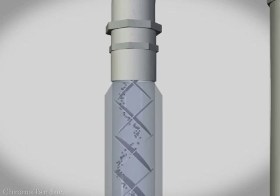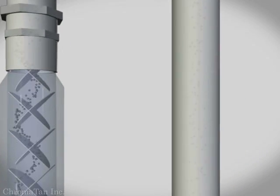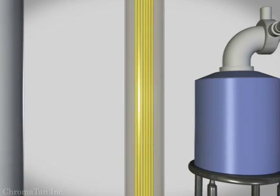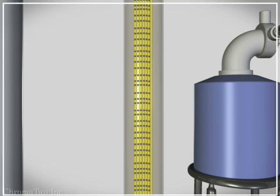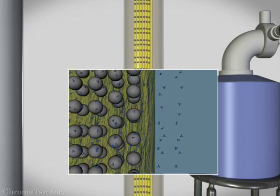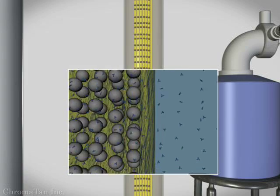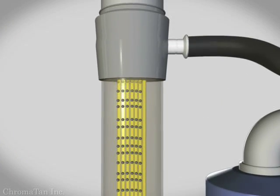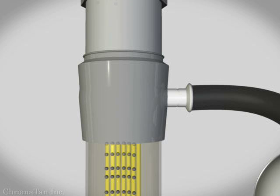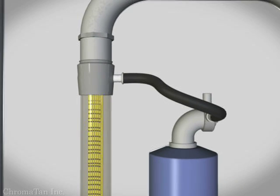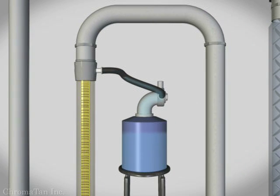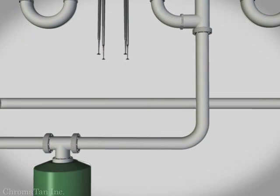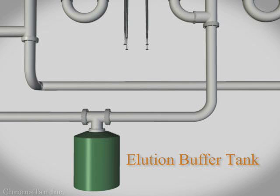The dilute slurry leaves the static mixer and enters the first hollow fiber module, whose purpose is to re-concentrate the slurry and separate the product molecule from resin particles. The module consists of a bundle of hollow fiber tubes with permeable membrane walls. The microporous walls retain resin particles, while the purified antibodies freely pass into the permeate side of the module. The re-concentrated slurry continues to the second stage of the CTC system, while the purified antibody is collected as product from the permeate side of the hollow fiber module. By itself, the first stage of the system can recover up to 85 percent of the product antibody.